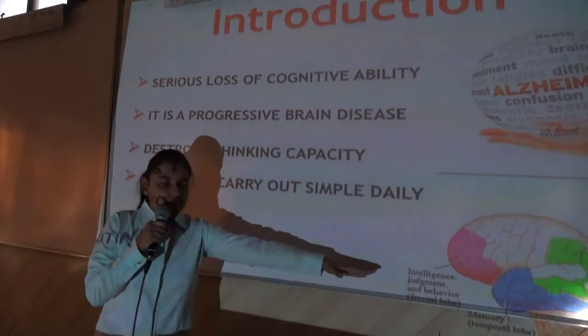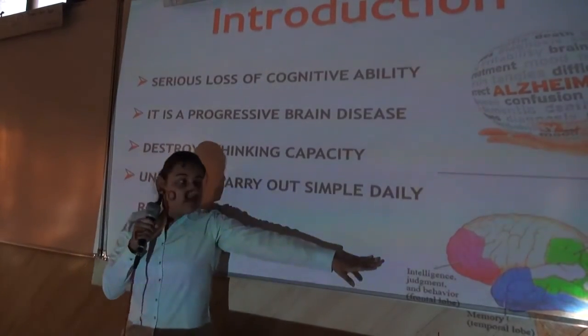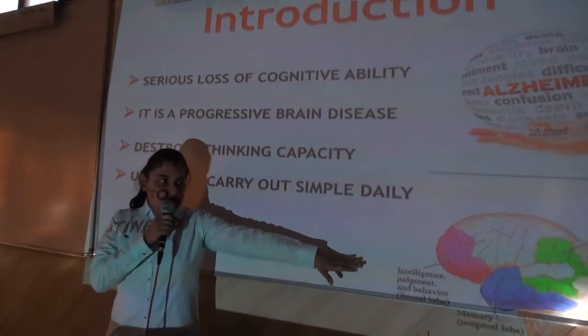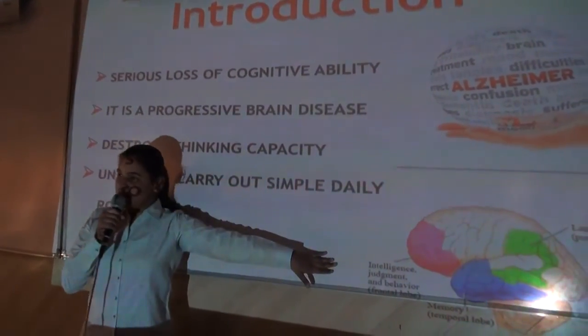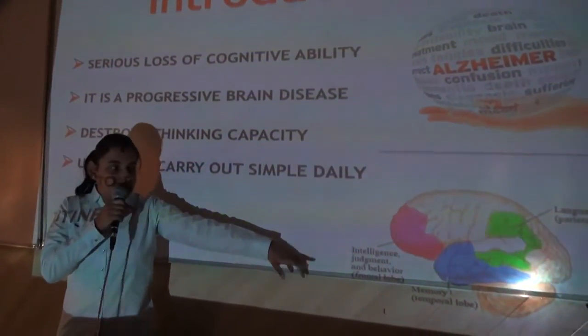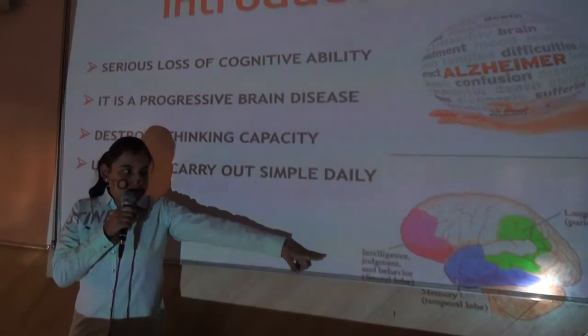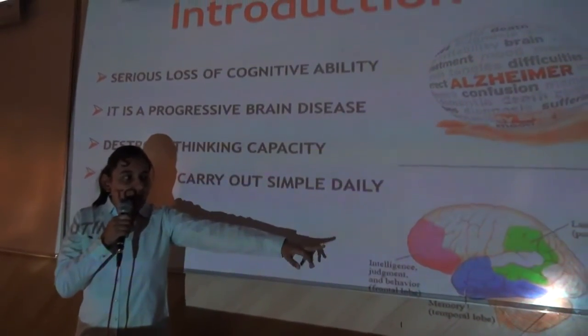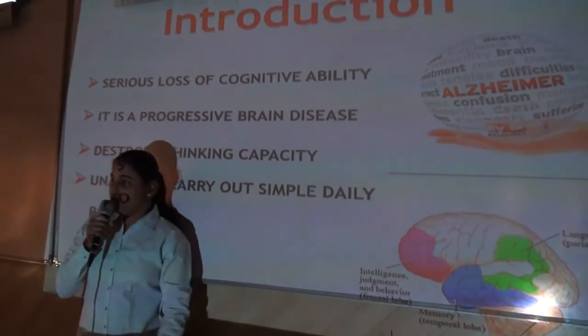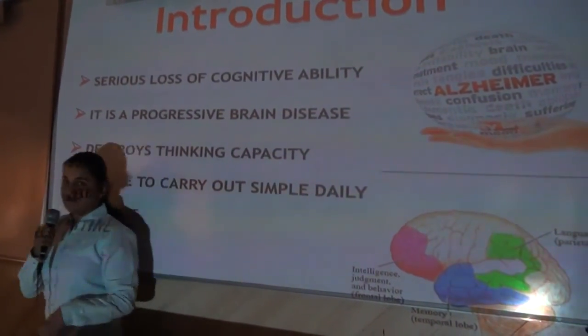Here you can see the picture of the brain. Some parts are shown which are affected by Alzheimer's disease — that is the intelligence part, the language part, and the memory part.